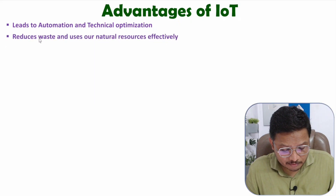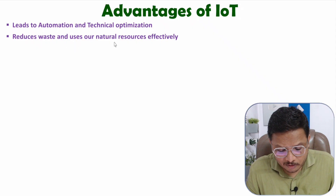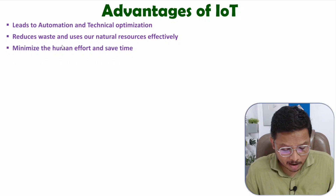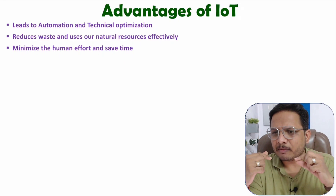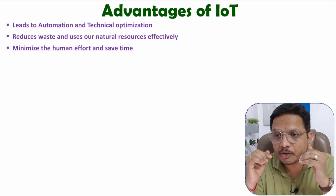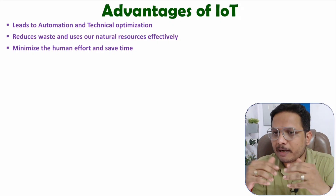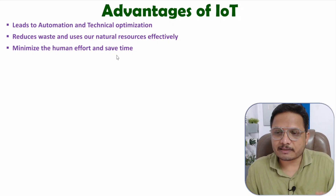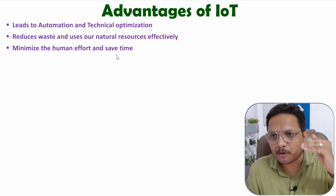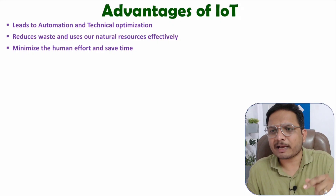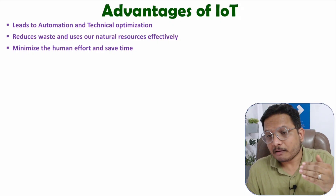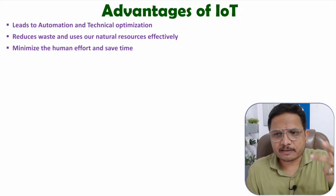When we talk about wastages, with the use of IoT systems, we will be reducing wastages and we will be using our natural resources effectively. When we talk about human efforts, here we are minimizing human efforts and we are saving time. In Internet of Things, when you make an application, there is a need for less interaction of human effort, so automatically you will be saving time. Decisions will be taken by IoT applications, so there is less need of human. In some critical situations, humans can take manual decisions, but in normal situations, decisions will be taken automatically.